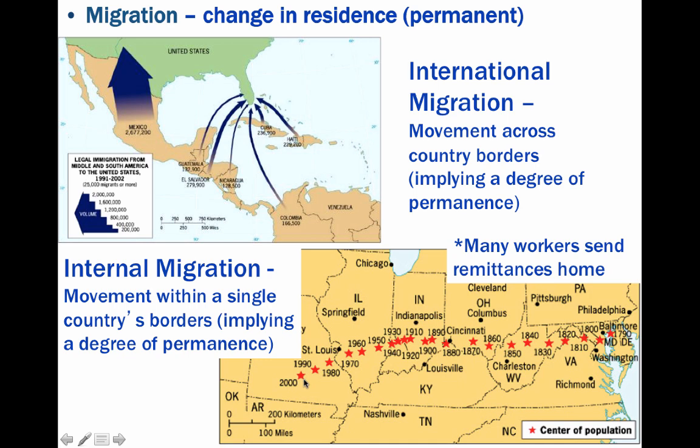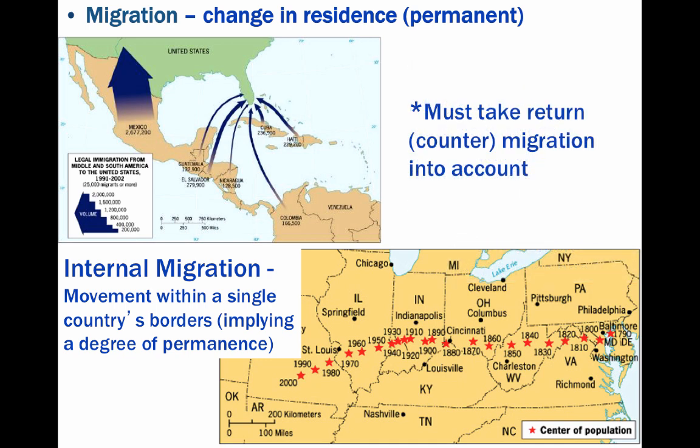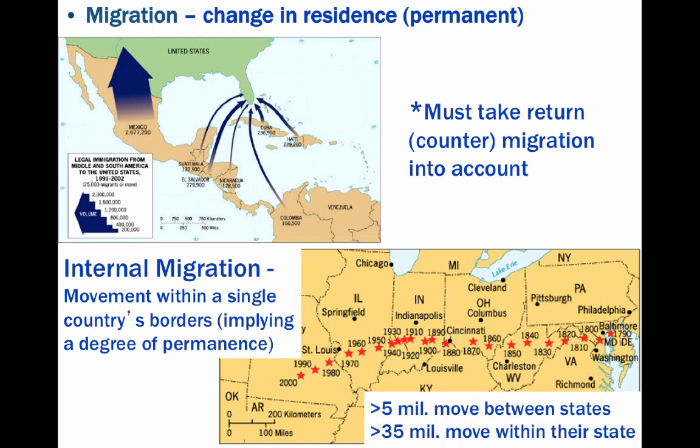The center of U.S. population today is in Missouri. Because of the affluence of the average American, the U.S. population is the most mobile in the world today. This is also due to our extensive highway system. Each year, more than 5 million Americans move between different states, and over 35 million people move within their own state.